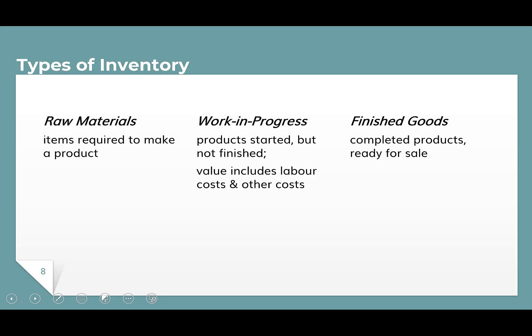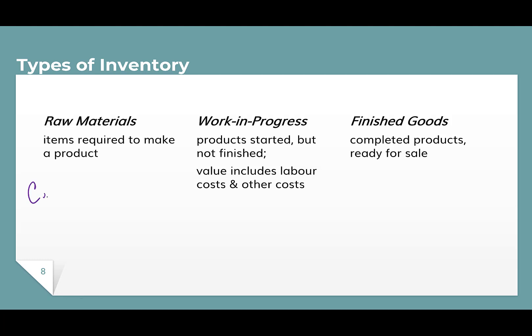In the world of manufacturing, there are actually three types of inventory. Remember, manufacturers are making things to sell, so at the end of a workday their inventory is going to be at different stages of completion. The first type is raw materials — these are items required to make a finished product. Using the example of a car, the raw materials inventory in a car factory might include aluminum, bolts and screws, glass for the windshields, leather for the seats depending on the car company, glue to put it all together, paint, and so on.